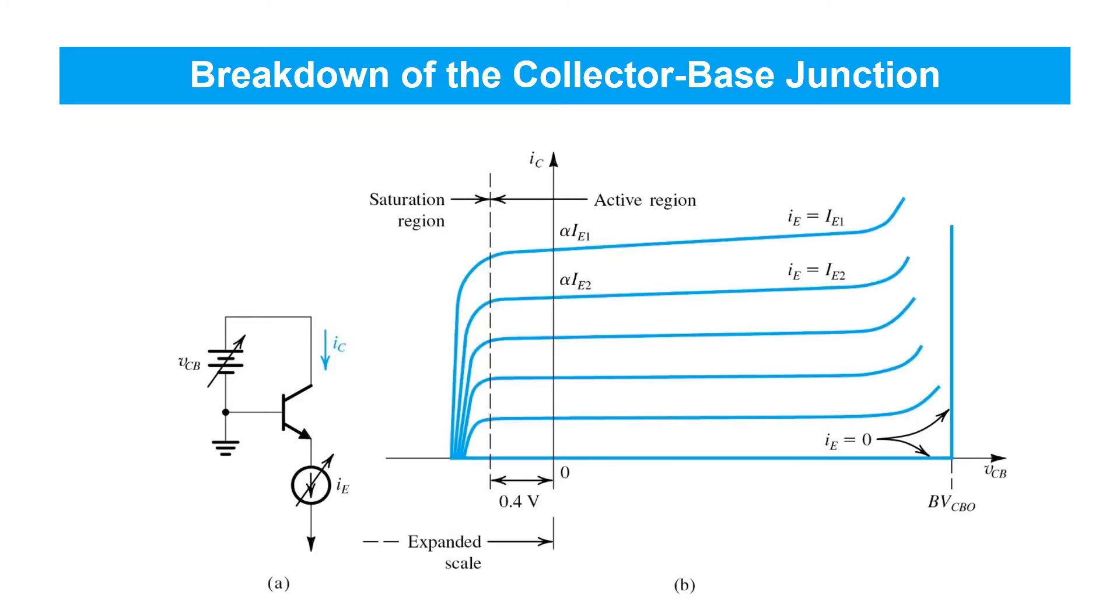To illustrate breakdown of the collector base junction, you can imagine a thought experiment such as the one shown here for an NPN transistor, where the emitter is biased with a constant current source, IE, that we can set to whatever value we like. And then for any fixed value of IE, we go ahead and sweep the collector base voltage by ramping this voltage source up and observe the resulting current IC. And what you end up with is the family of plots shown here on the right, where each plot is taken at a fixed value of emitter current and is the plot of the collector current as we vary the collector base voltage.